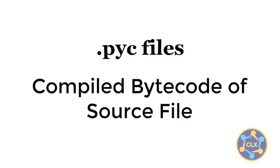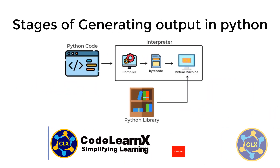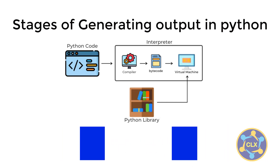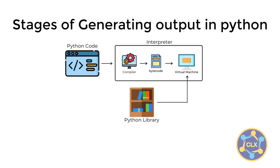When we write our source code in a high-level language, that cannot be understood by the Python virtual machine — the Python interpreter cannot understand that source code. So there must be a mechanism where that source code is converted into a different format. We compile that source code into bytecode, which is easily understood by the Python interpreter. The interpreter then interprets that bytecode line by line to produce output, and that bytecode is stored in .pyc files.